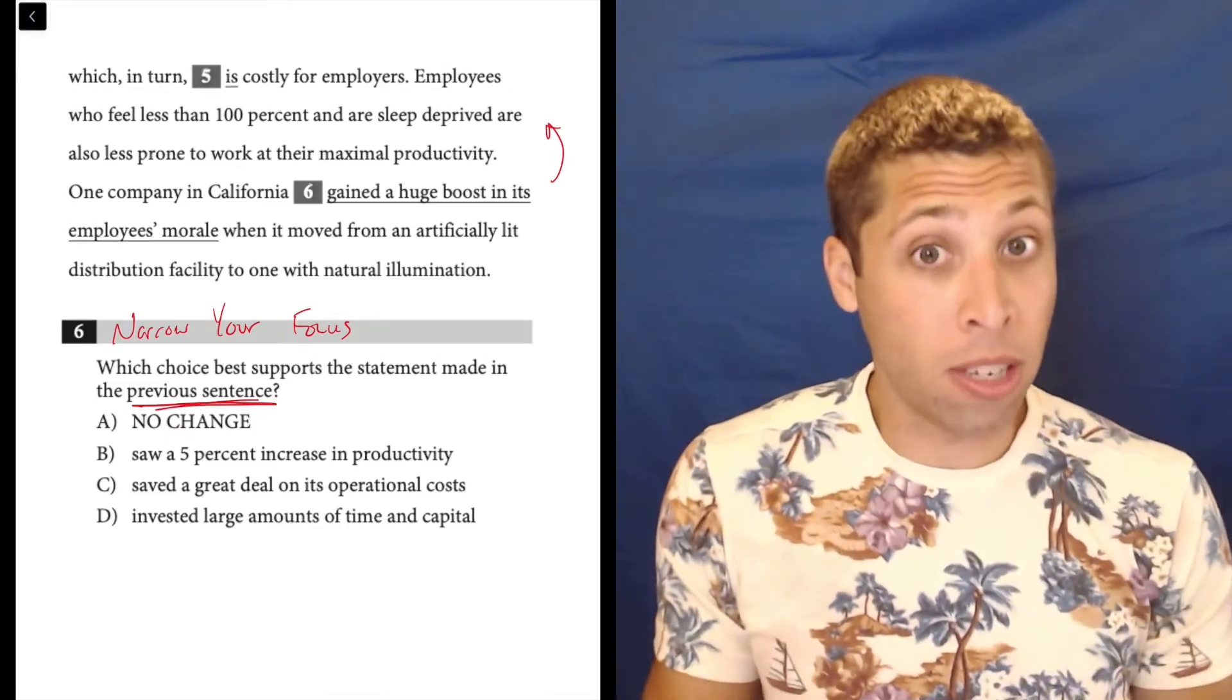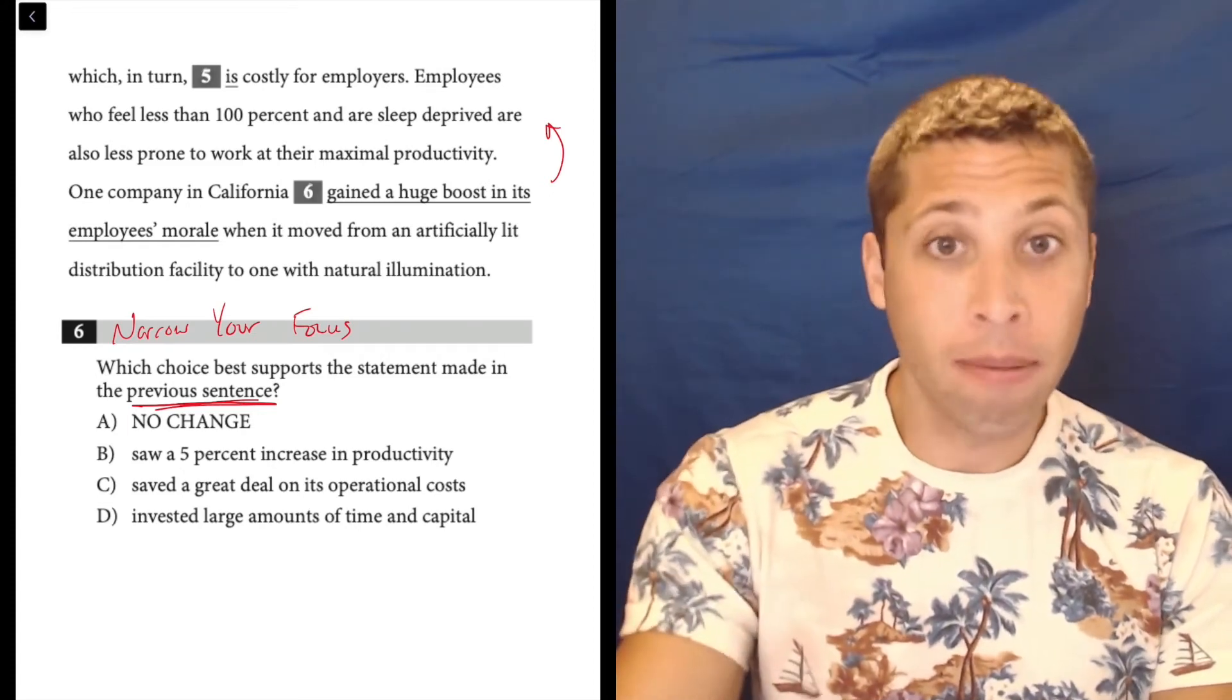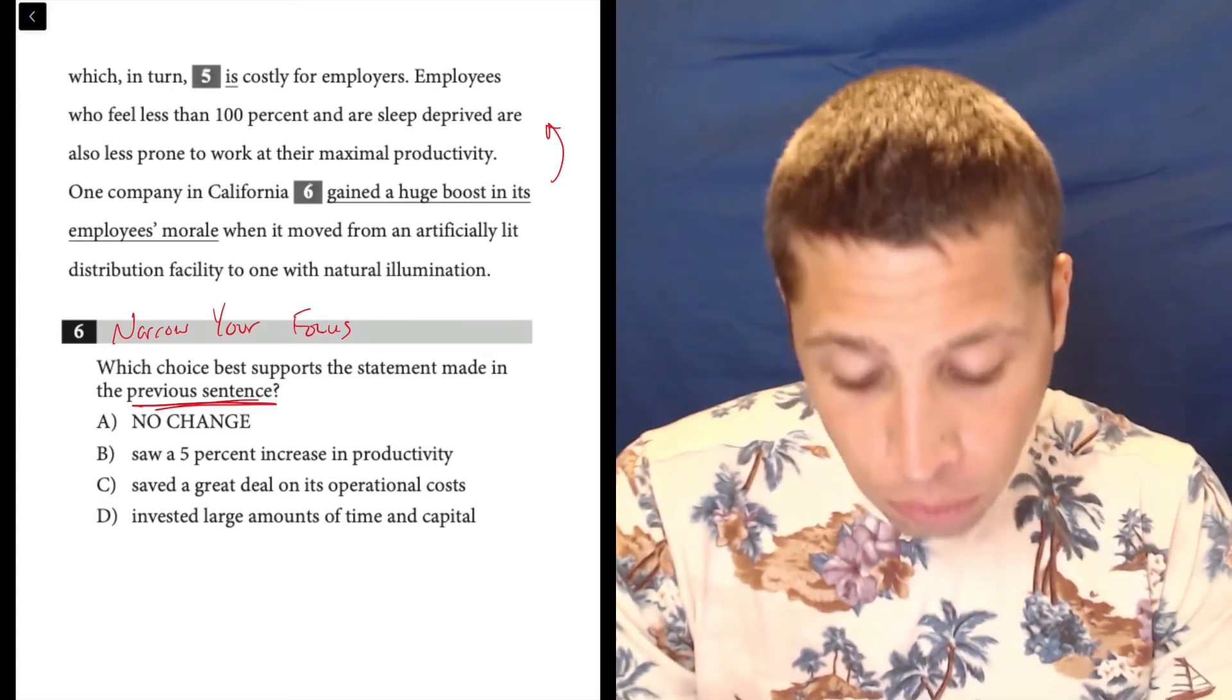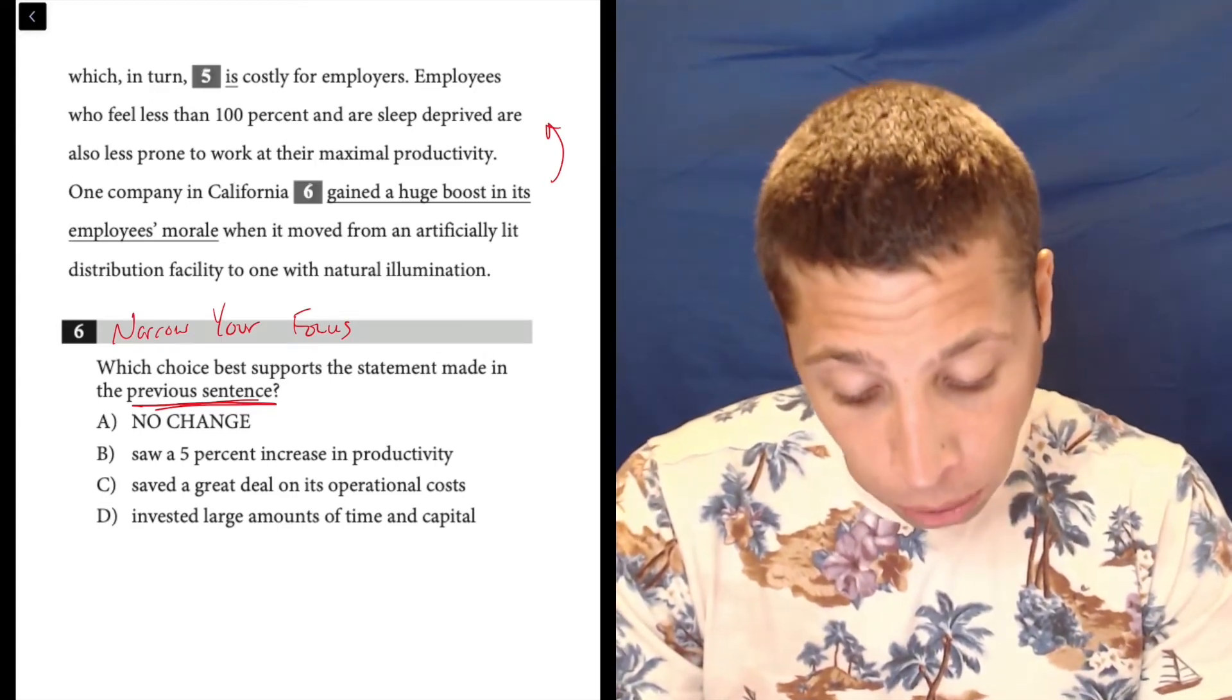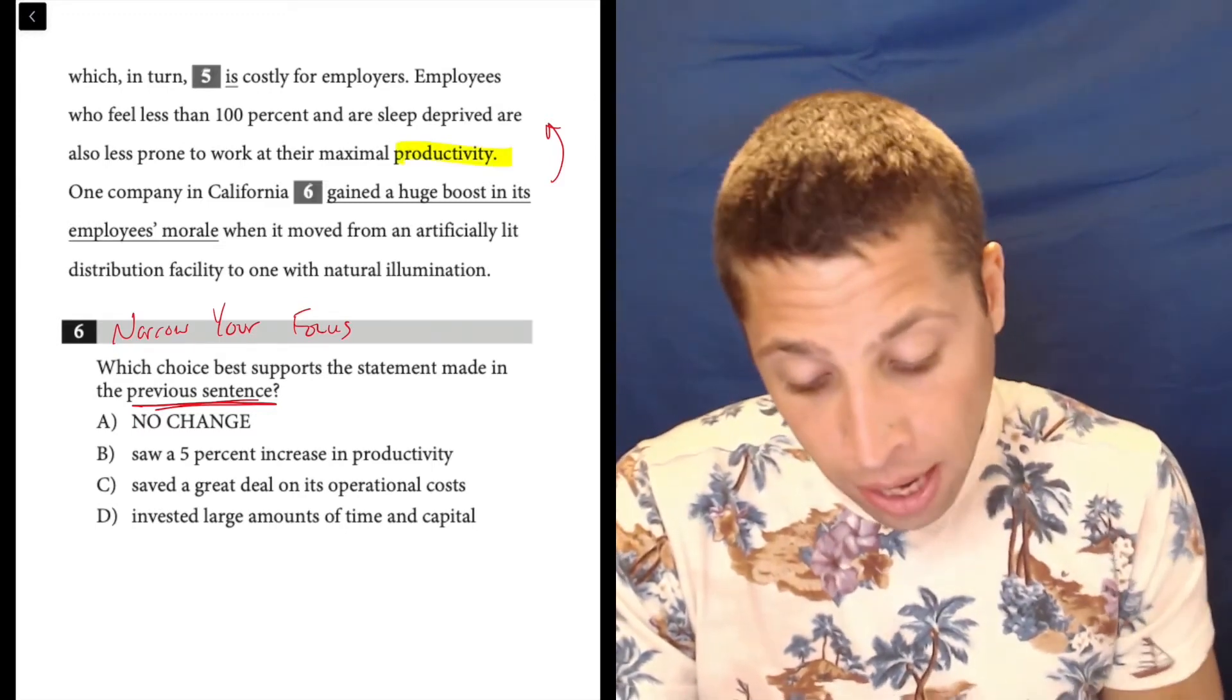Now we can start to think about dumb summaries. What is this sentence about? What seems to be the main words in this sentence? Employees who feel less than 100% and are sleep deprived are also less prone to work at their maximal productivity. It's about productivity and sleep.